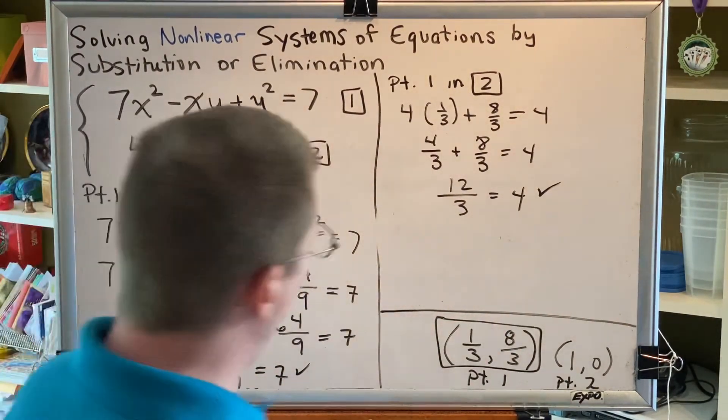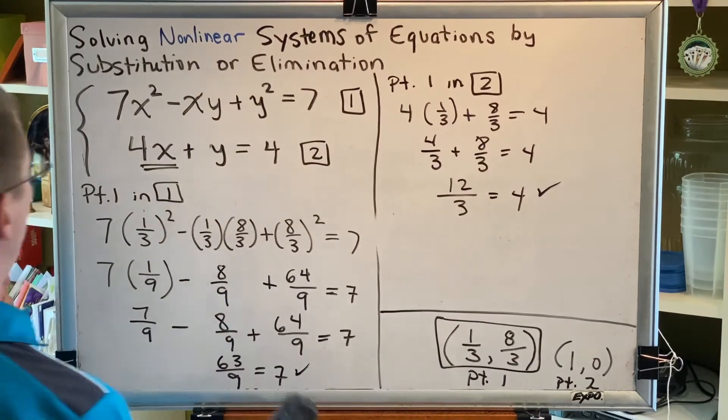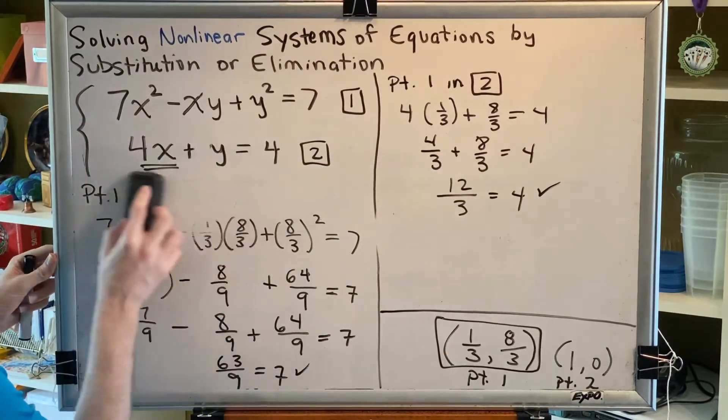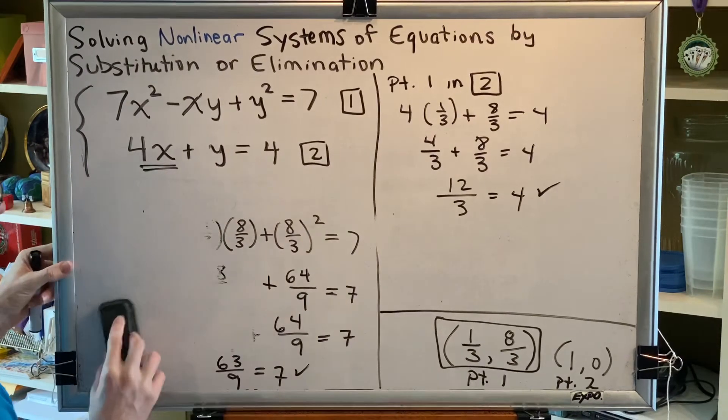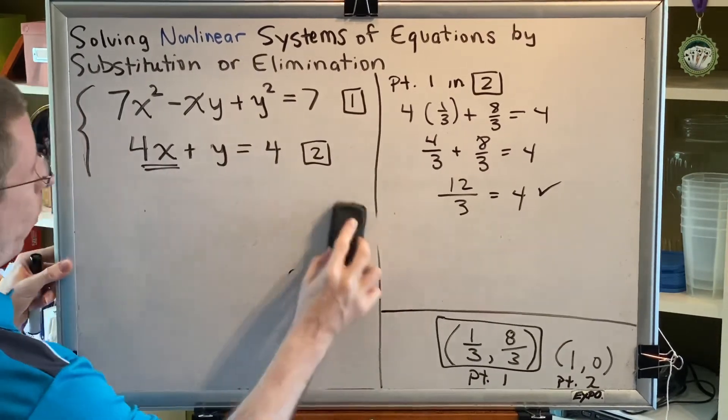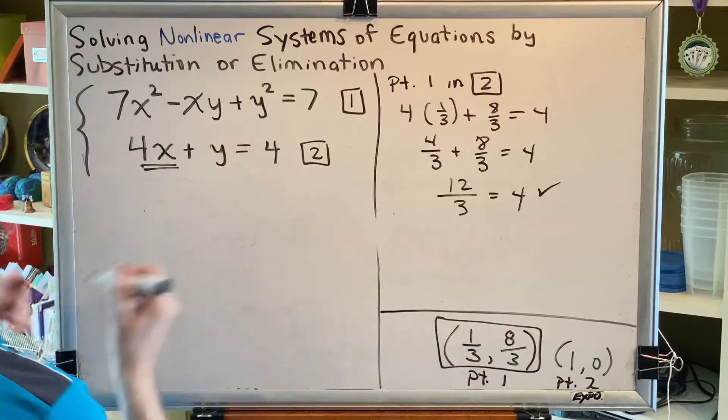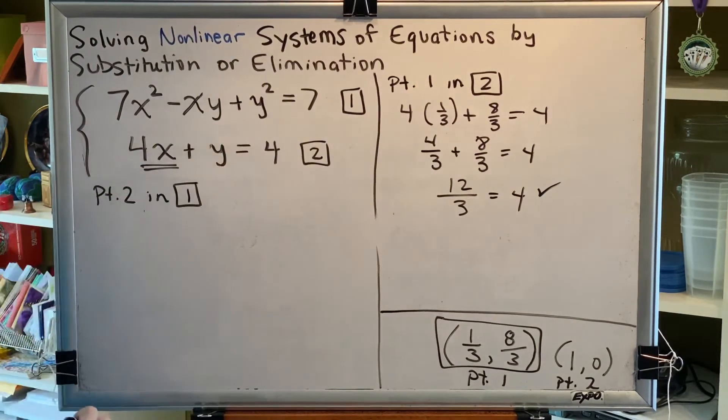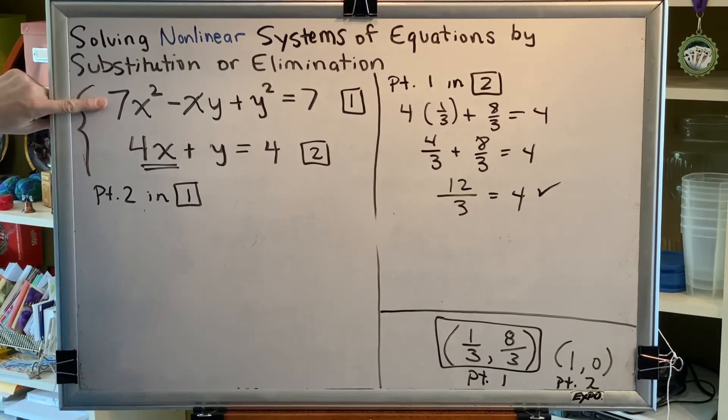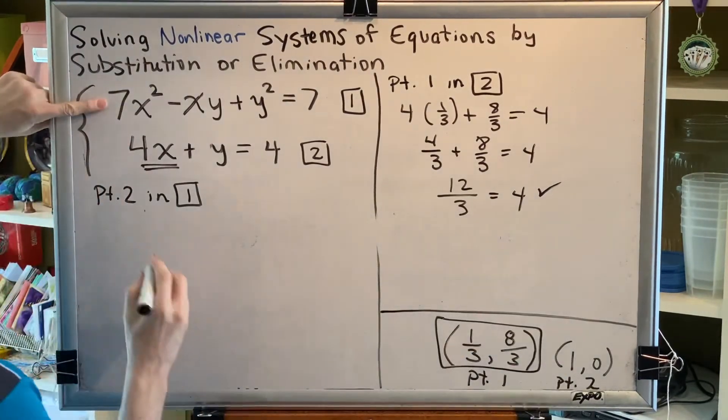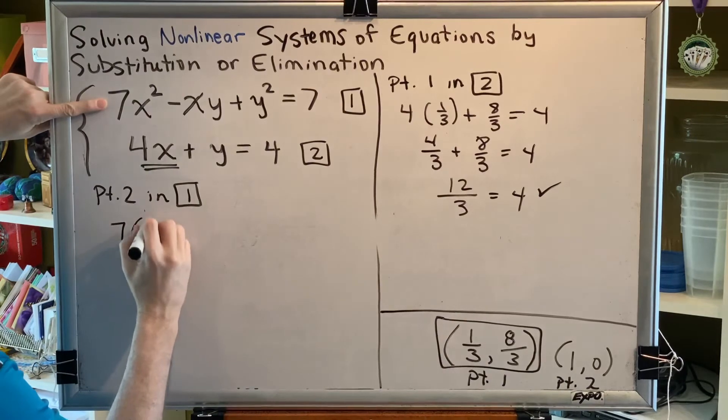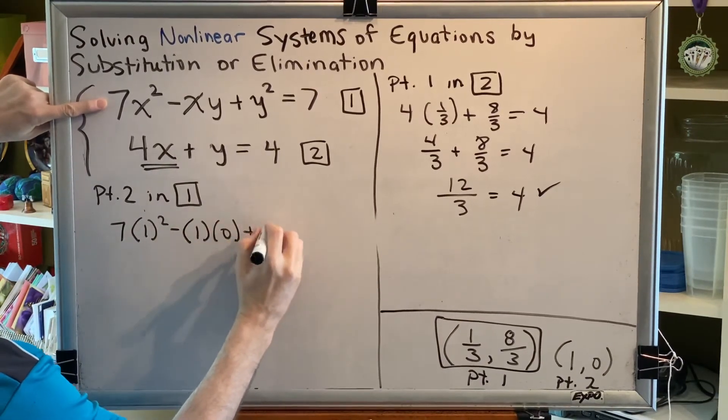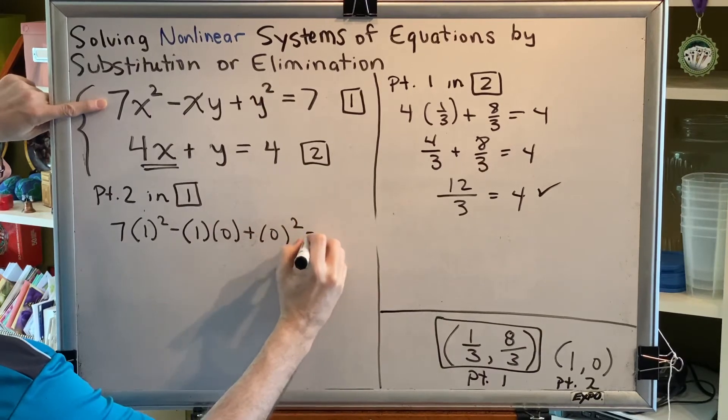We are a little more than halfway done. I say that because it will be much shorter and much easier to check point two since it doesn't have any fractions in it. So let's put point two in equation one. Everywhere in equation one that we see an x or a y, we'll put a one or a zero respectively. So we get seven times one squared minus one times zero plus zero squared equals seven.